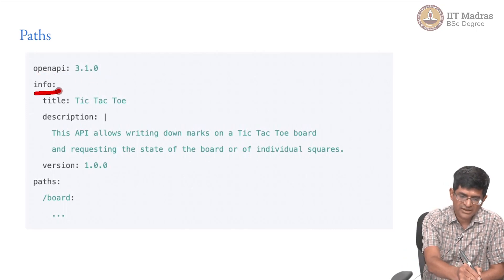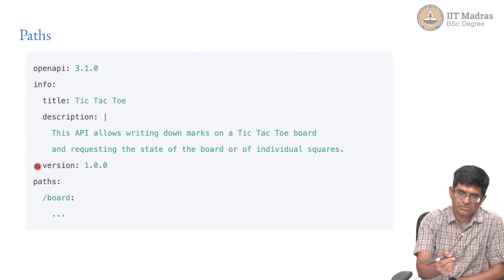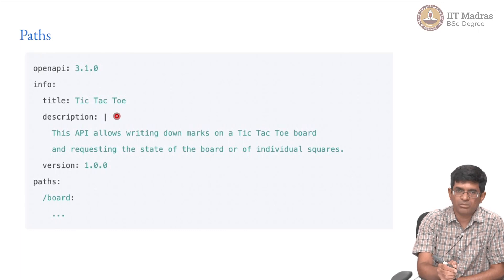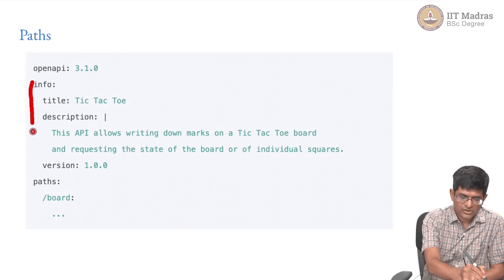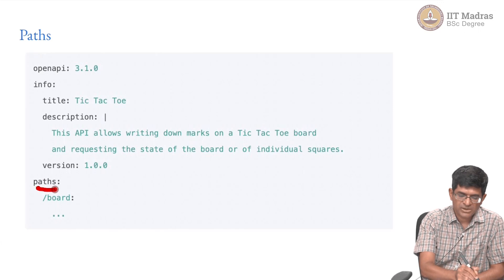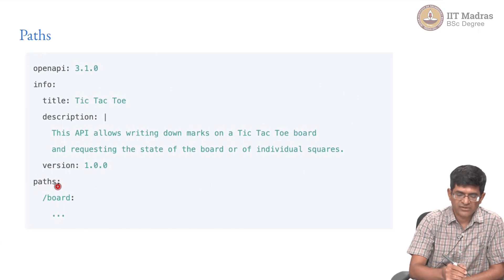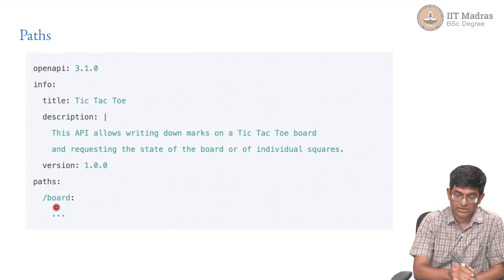The 'openapi' and 'info' sections are something you already saw — we had a title and version earlier. Now it also has a description, and as you can see in YAML it allows you to have a multi-line description. All of this is sort of the header part. Then come the paths — previously in the trivial example it was just null, basically saying there are no paths. Here, for example, we would have paths, and there might be a path such as /board that can be used to get the present state of the board.